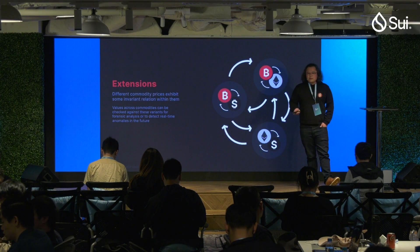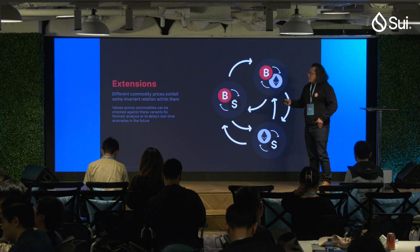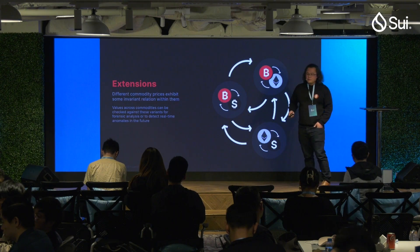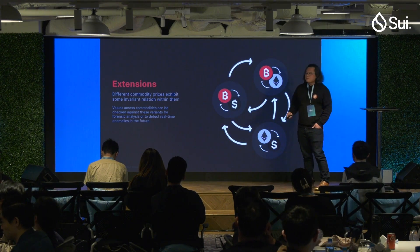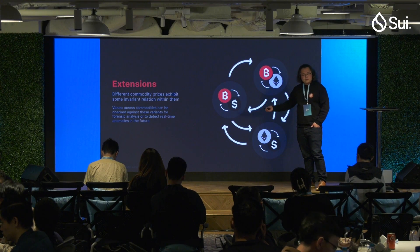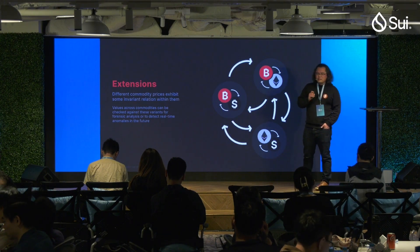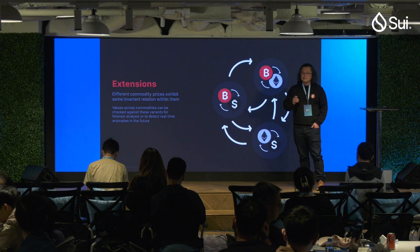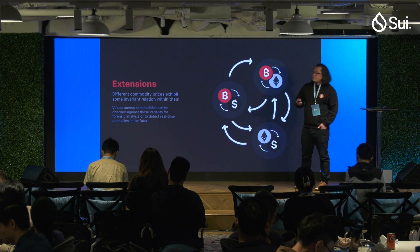Since Supra has a backbone blockchain, we can also do cross-commodity correlation. For example, if we know the price of Bitcoin to USD, the price of Bitcoin to Ether, and the price of Ether to USD, we can cross-correlate the assets to detect any anomalies very quickly in case of issues.